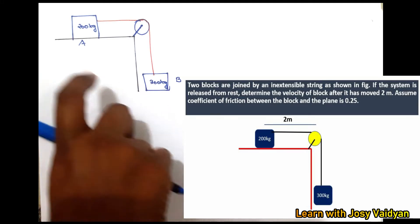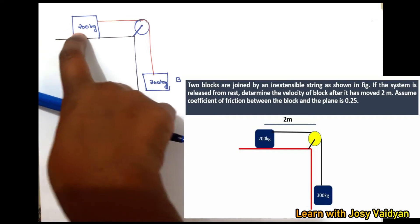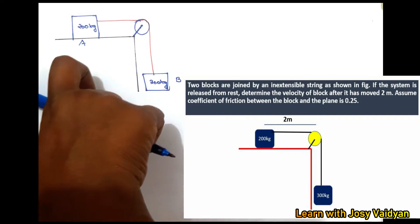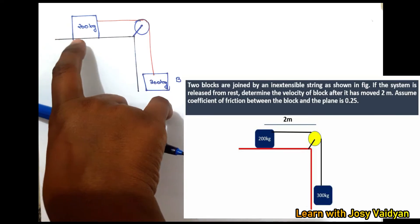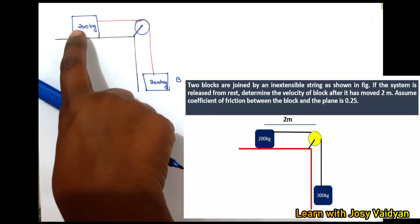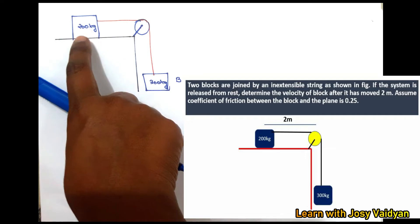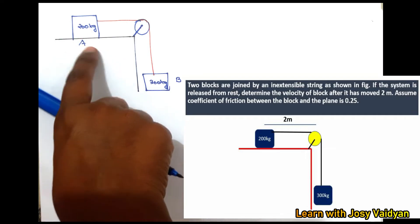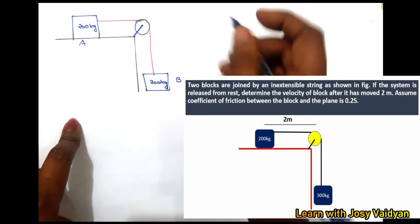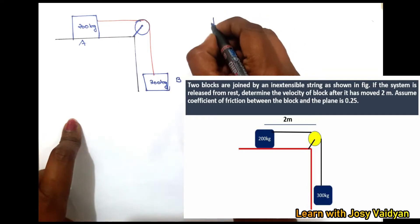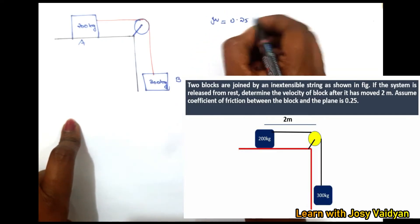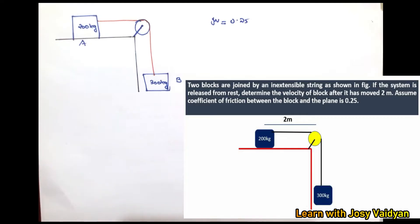These two blocks are placed at rest and released. We need to find the velocity after the block travels a 2 meter distance. The coefficient of friction between the block and the plane is 0.25.